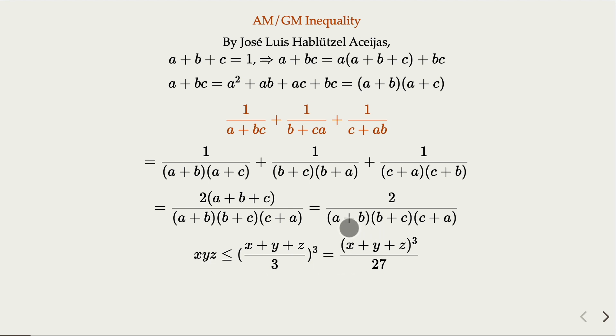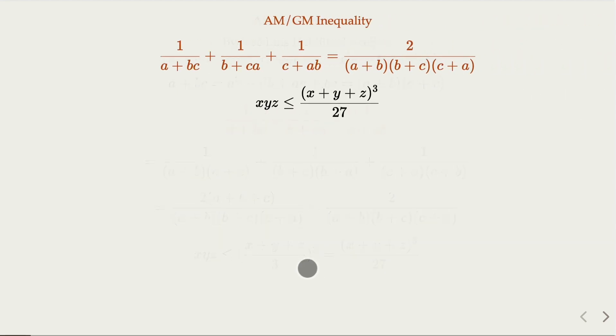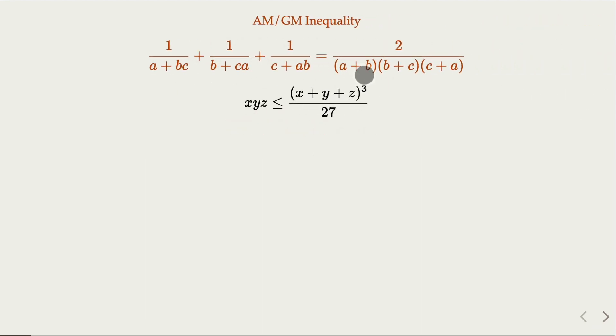Now here, we plug in here x, y, z here. So let's go. And of course, x plus y plus z would be the sum of these three terms. That would be 2 of a plus b plus c. That is 2. 2 to the third power would be 8. So you plug in the whole thing here.